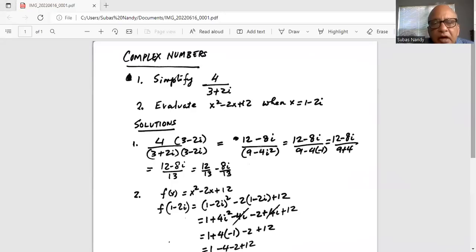Complex numbers. There are two problems. Part one is simplify 4 divided by 3 plus 2i, where i stands for the imaginary or complex number, which is equal to square root of minus 1. And then the second problem is evaluate x squared minus 2x plus 12, when x is equal to 1 minus 2i.